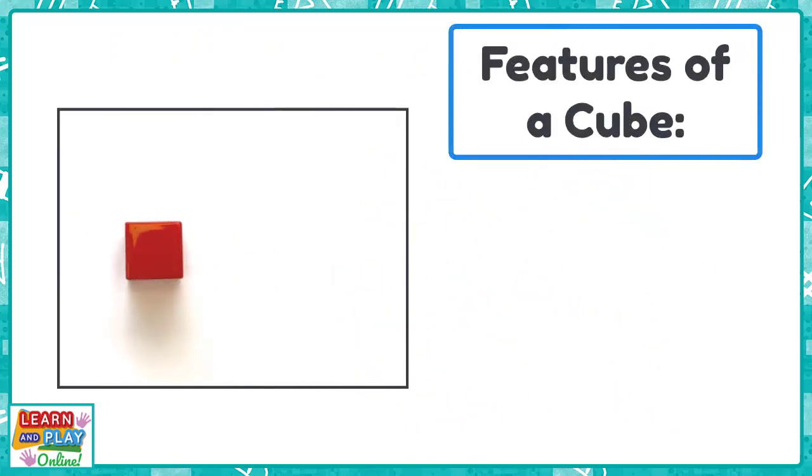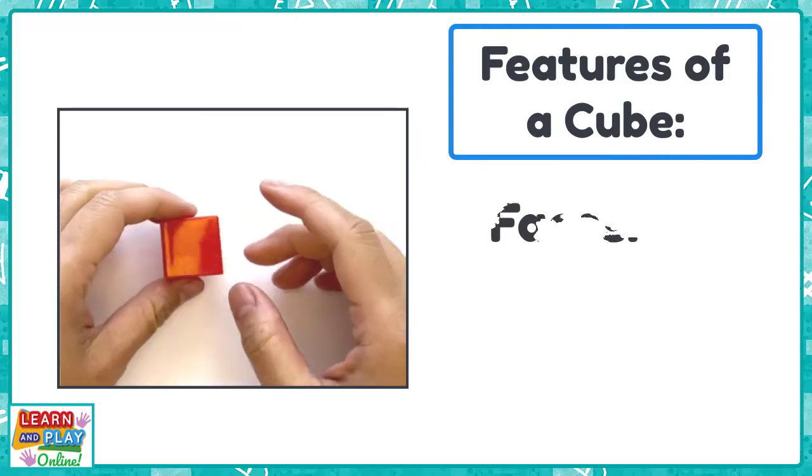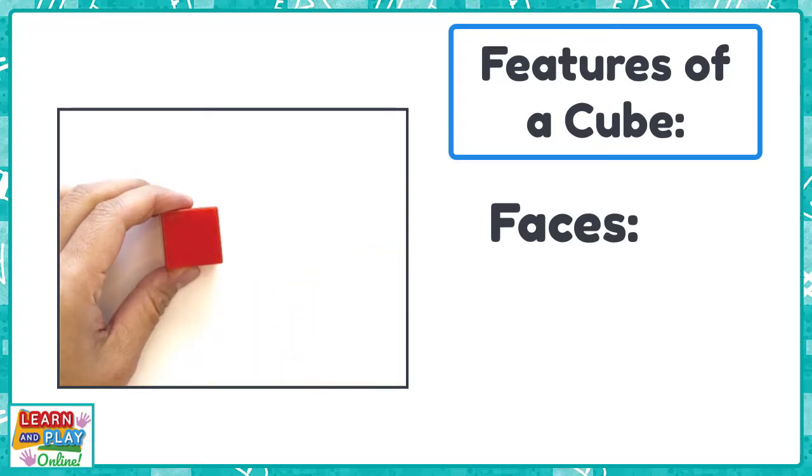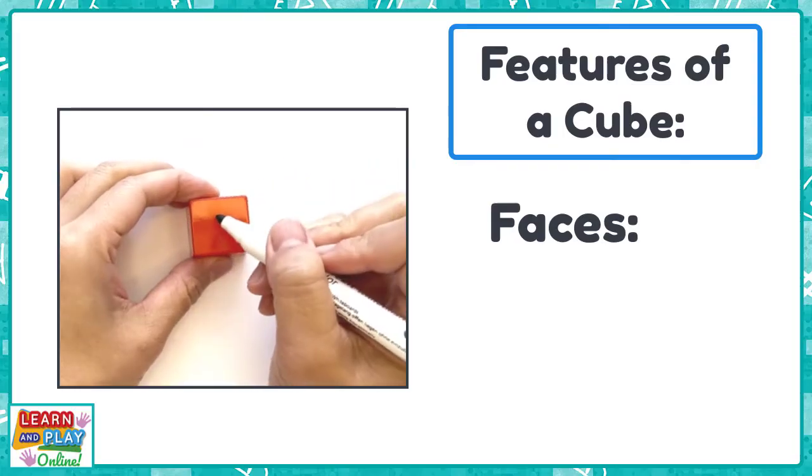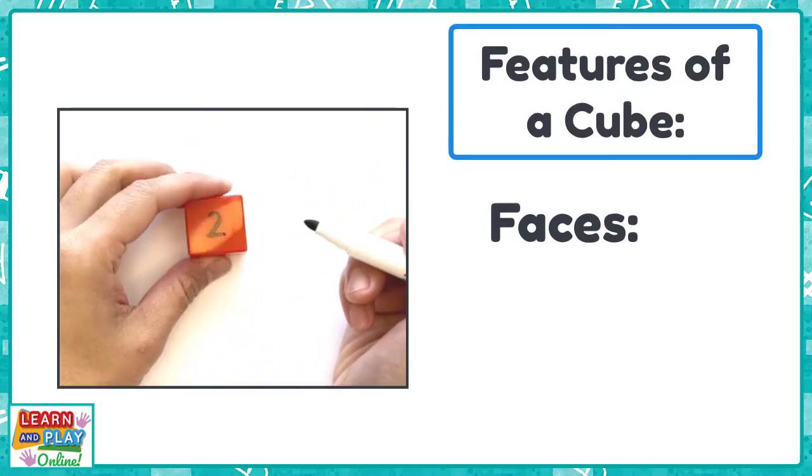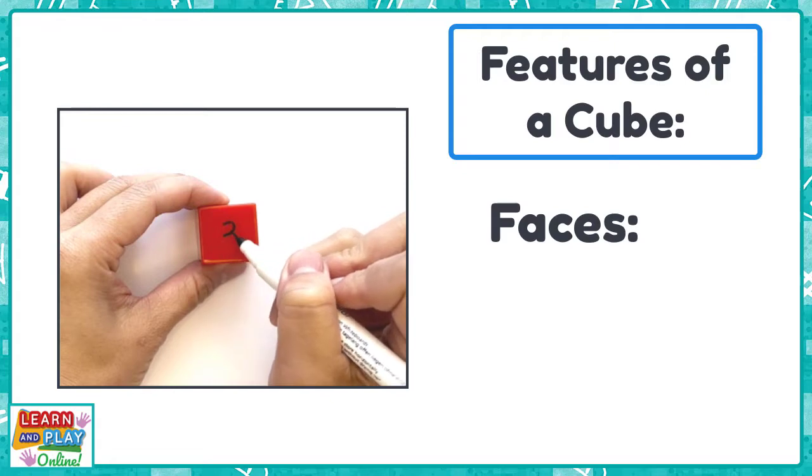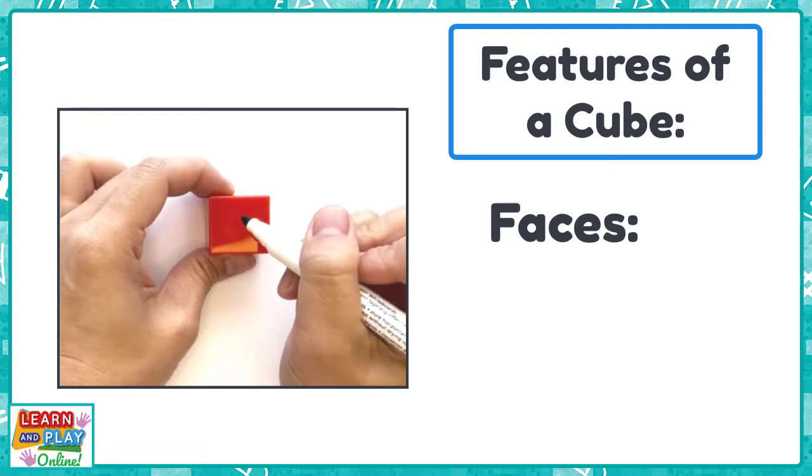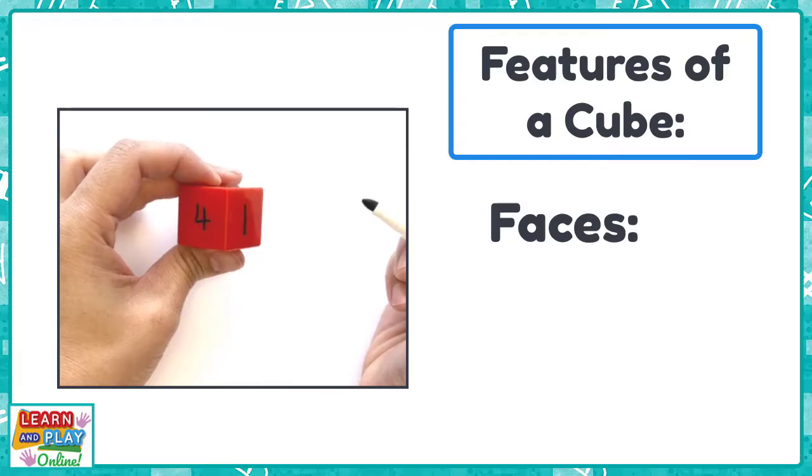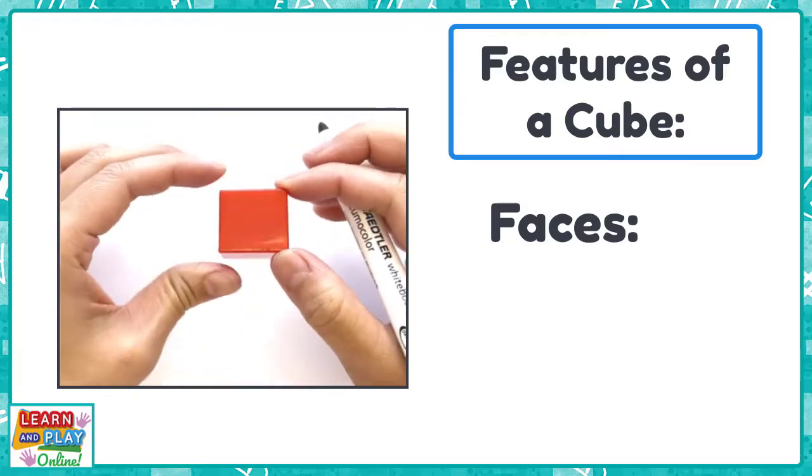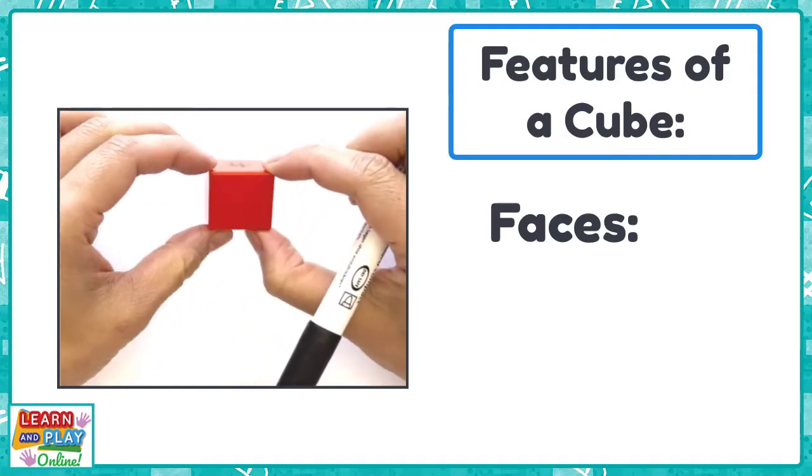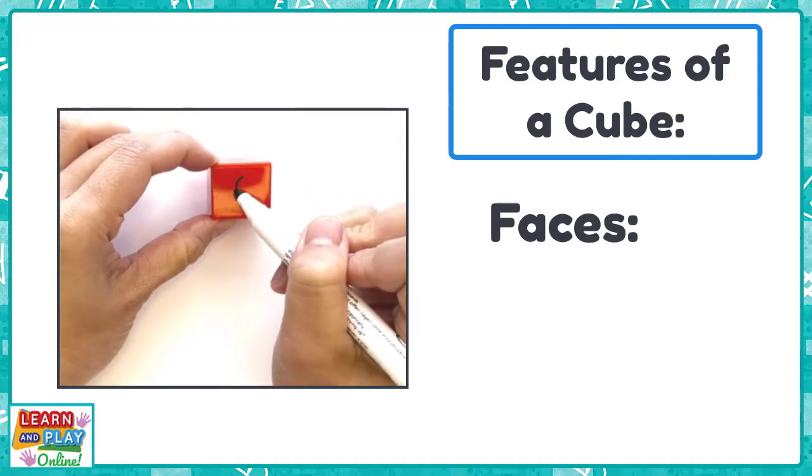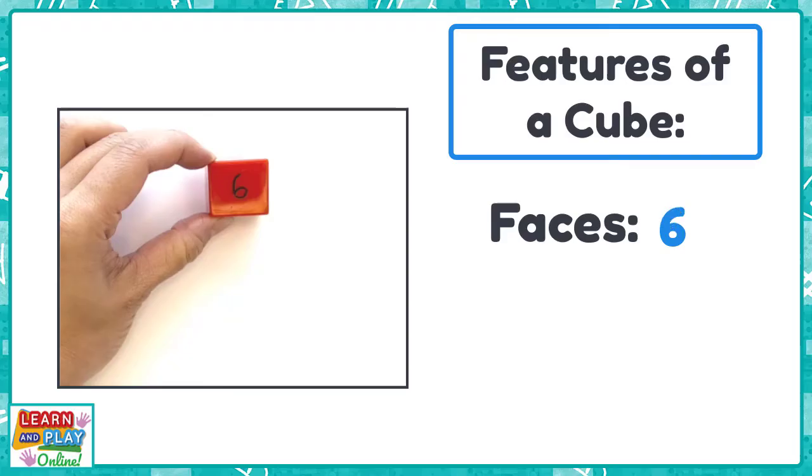We are now going to look at the features of a cube. The first thing we are going to look at is how many faces a cube has. One, two, three, four, five, and six. A cube has six faces.